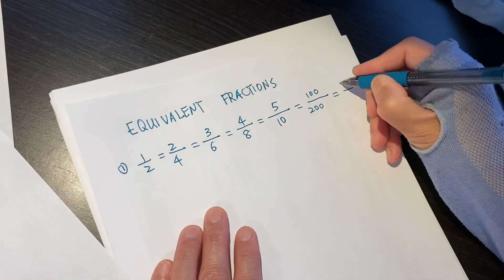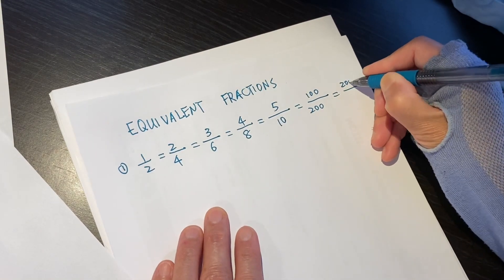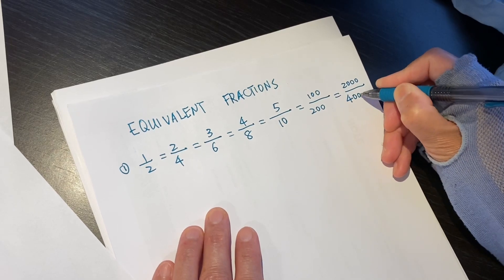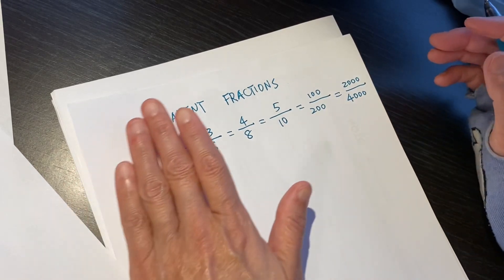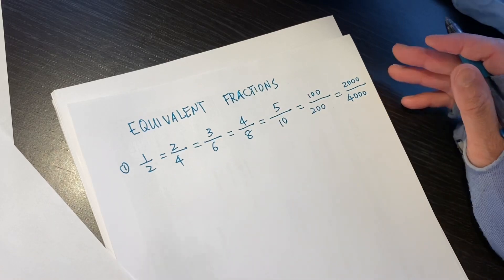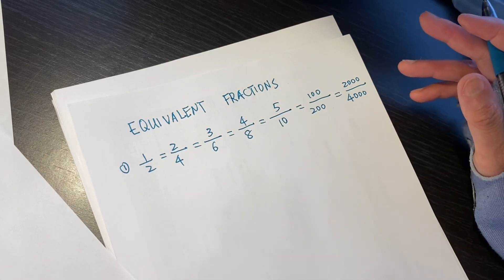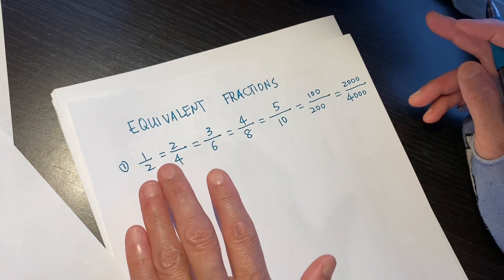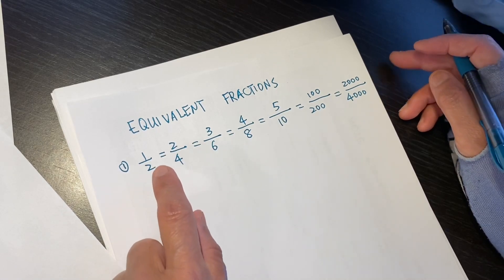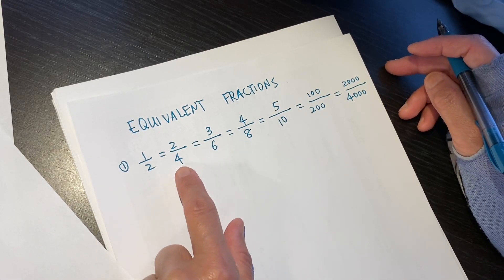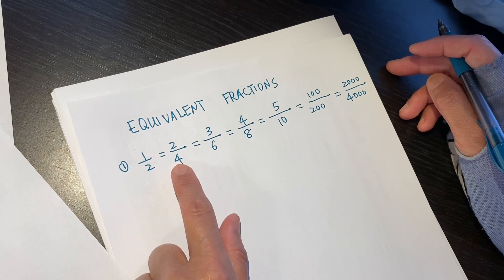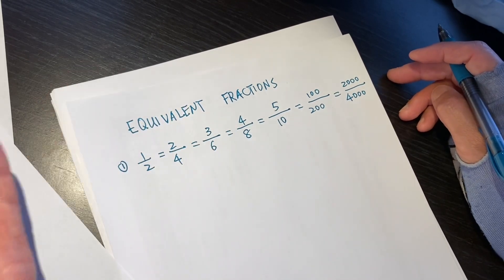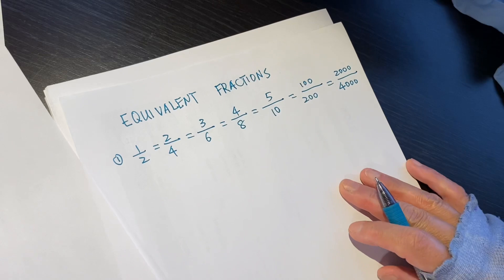It can be 2,000 over 4,000. There is no end. There are many, many, many numbers that can be the same as this half. Because 2 out of 4 is half, 3 out of 6 is half. All this is half.